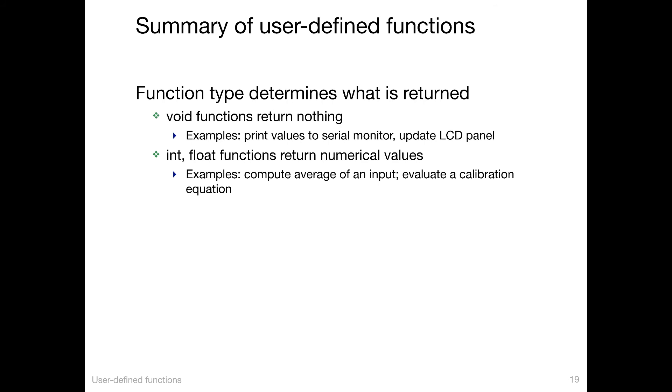Examples besides setup and loop are when you want to write a function to print values to a serial monitor. Maybe there's some complicated formatting before you want to print those values. Other examples would be to update an LCD panel, which has several lines of positioning arguments about where to put the individual characters on the screen. So those are nice examples where there's no need to return a value, hence the type of function is void.